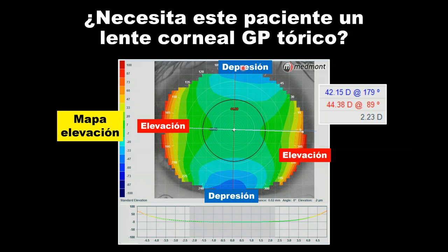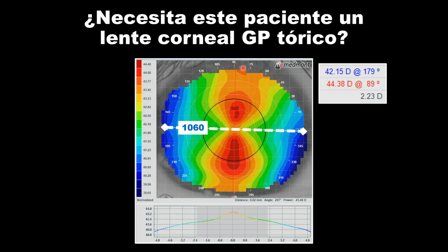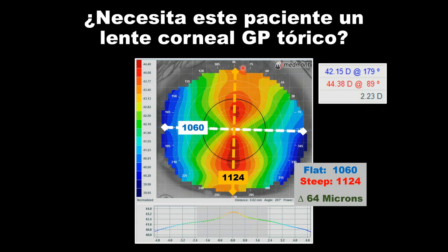Let's switch over to the elevation map and look for where the eye is high and where the eye is low. Red tells you the elevation of the eye is high; blue tells you the elevation of the eye is low. If we compare the height of the elevation to the height of the depression, we can understand if we need a symmetric corneal GP or a toric corneal GP.